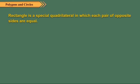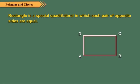Rectangle is a special quadrilateral in which each pair of opposite sides are equal. The figure ABCD is a rectangle because AB is equal to DC and AD is equal to BC.